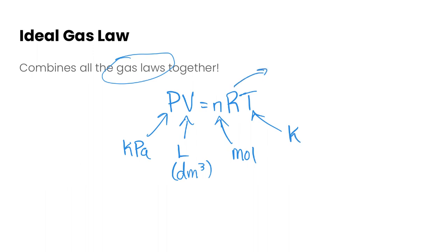Now R is the gas law constant. And so this is a constant value. And the value that we use is 8.31 and the units are kPa liters per mole per Kelvin.